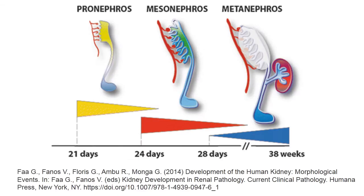By the time pronephros exists, mesonephros starts to develop. At this point, pronephros degenerates. While mesonephros is degenerating, from day 28 the metanephros starts to develop.